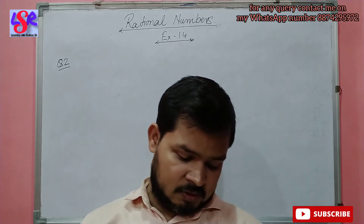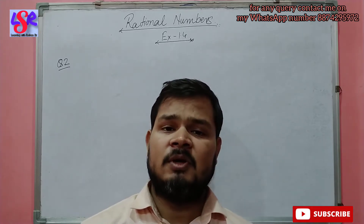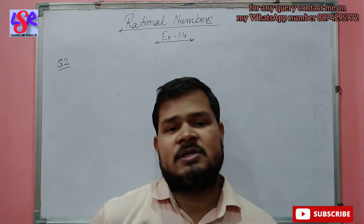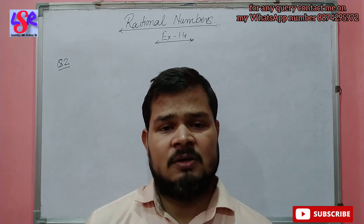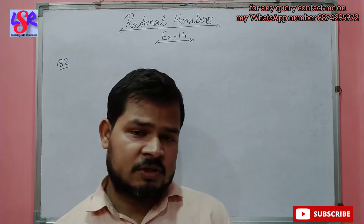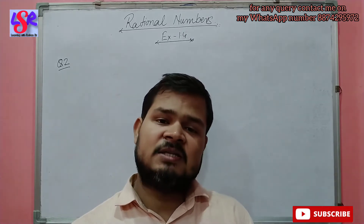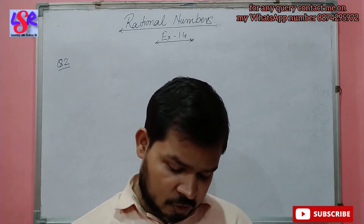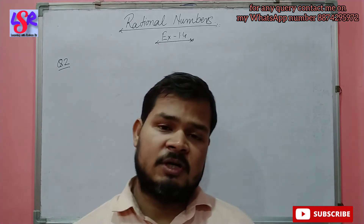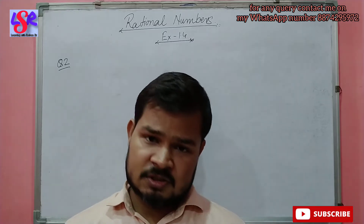The third one is about the commutative property. For commutative property, A divided by B is not equal to B divided by A in the case of division. Since the statement uses a 'not equal' sign, it is true. Similarly, the fourth part also involves the associative property with a 'not equal' sign, so that statement is also true.